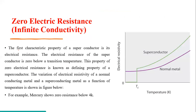Our first property is zero electrical resistance or infinite conductivity. The first important characteristic of a superconducting material is its electrical resistance. Beyond a certain temperature — the critical temperature — when the material's temperature is brought below this value, the resistance of the superconducting material becomes zero. So the resistance of this material will become zero.